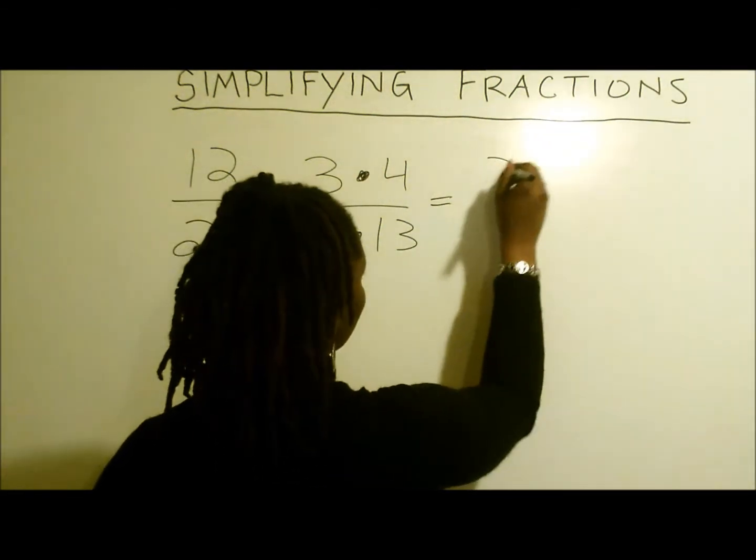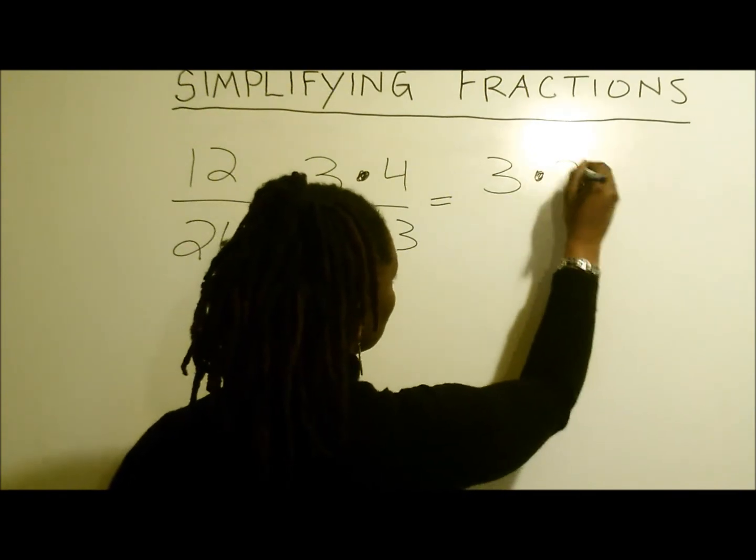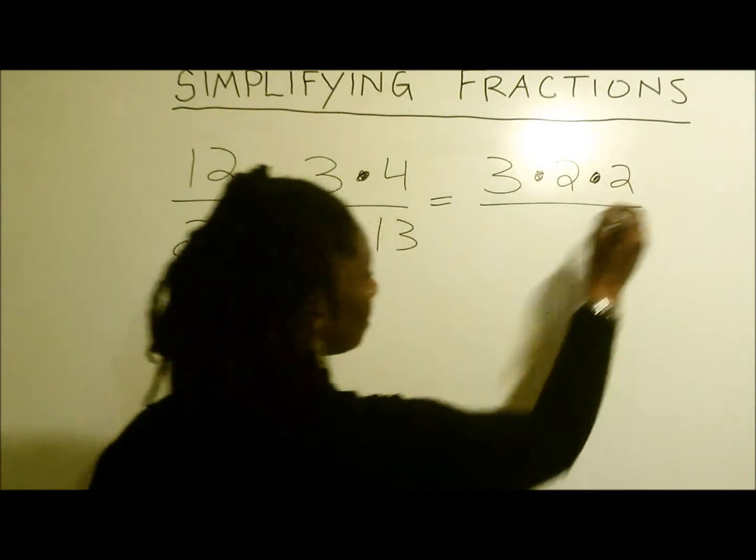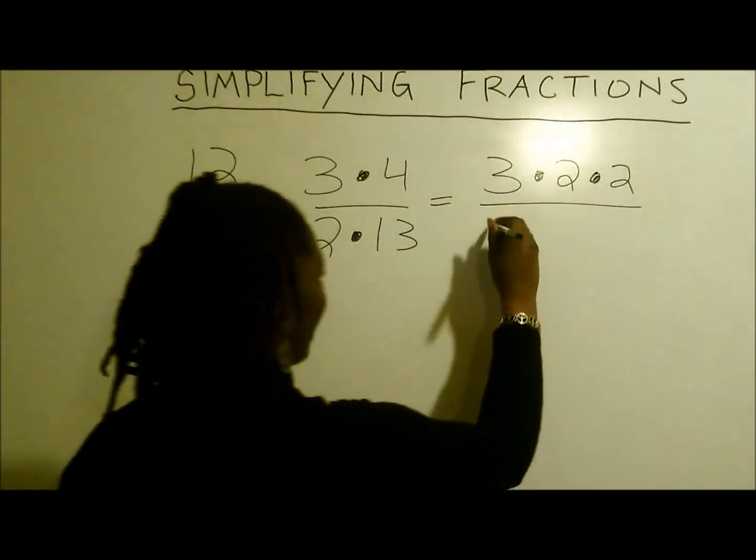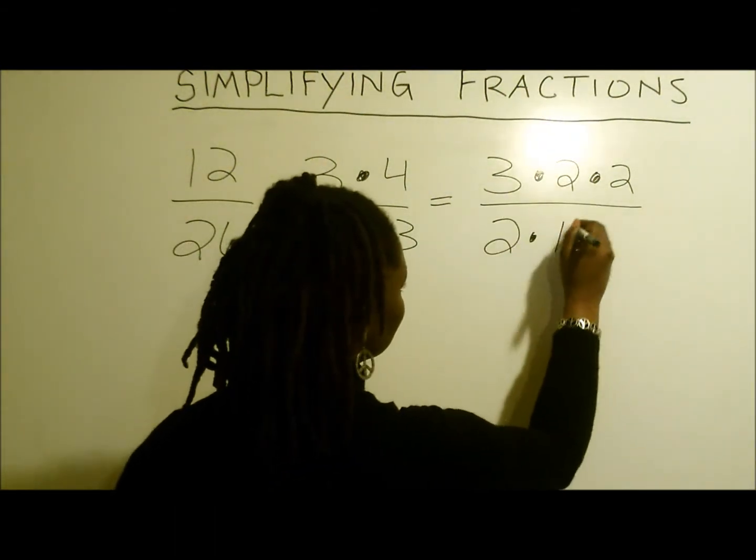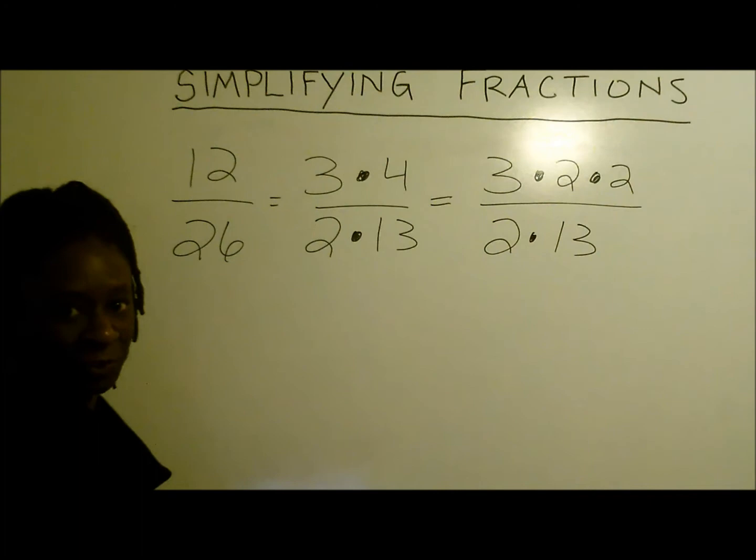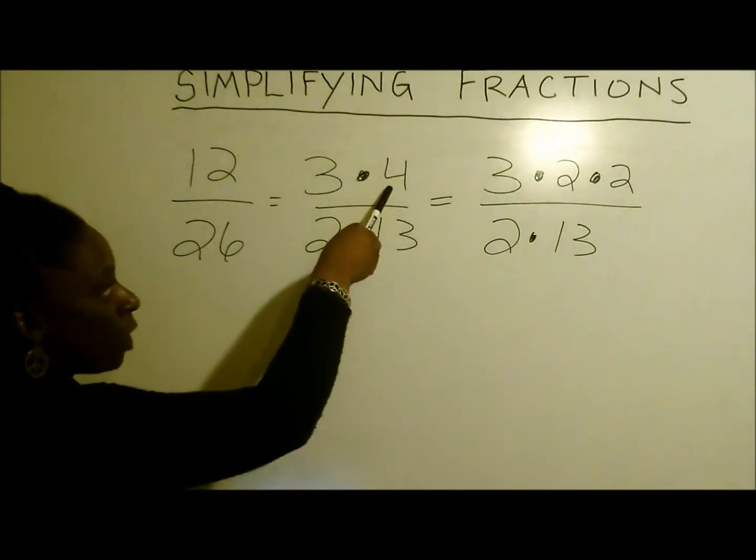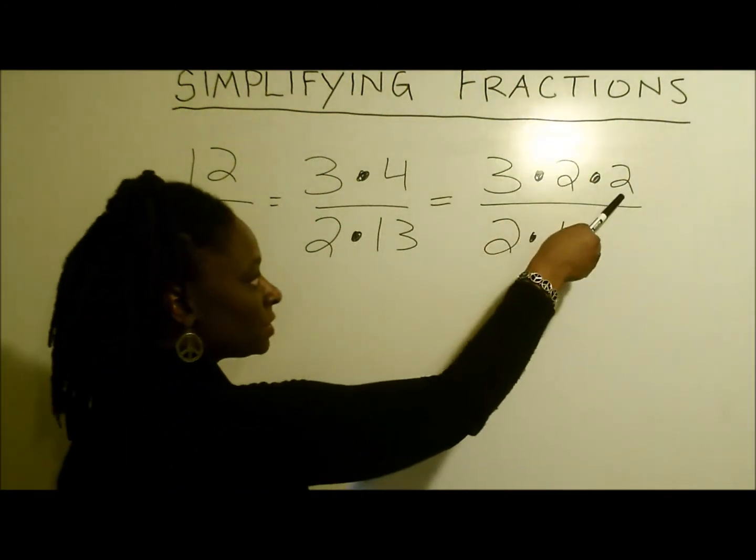So now we have 3 times 2 times 2, which gives us 12. And 2 times 13 still gives us 26. So we simply broke the 4 down further to 2 times 2.